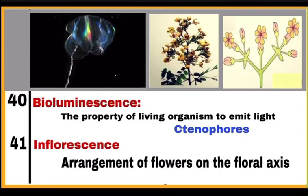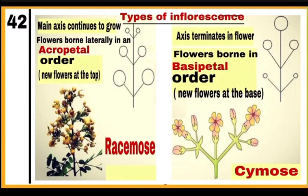Inflorescence: the arrangement of flowers on a floral axis. It is of two types. Racemose: the main axis continues to grow and flowers on the axis are borne in acropetal order — new flowers are present at the top and older flowers at the base. Cymose inflorescence: the main axis terminates in a flower and flowers are borne in basipetal order — new flowers are present at the base and the older flower is present at the top.